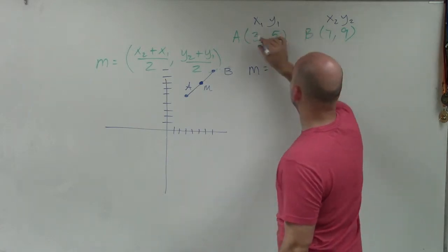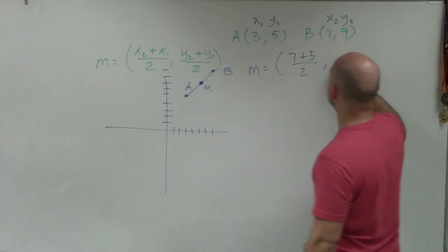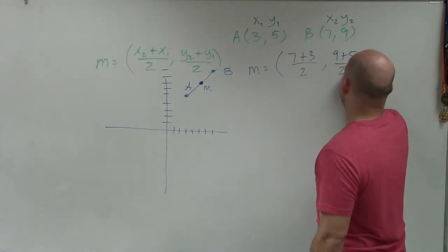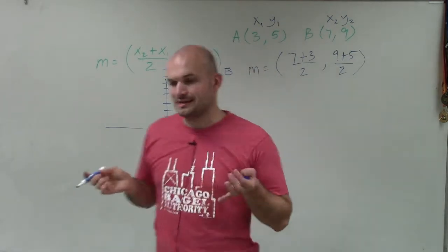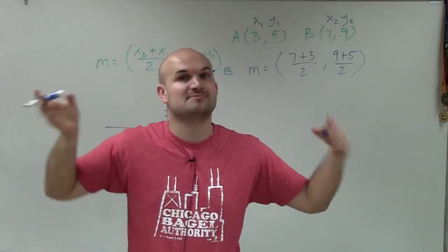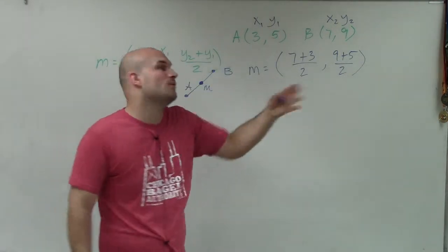So m equals x2 plus x1. So it's going to be 7 plus 3 divided by 2, comma, 9 plus 5 divided by 2. Now it's important for us to understand the distance gives us the actual value from one point to the next. But the midpoint gives us a coordinate point. It's going to give us a new x and y value.